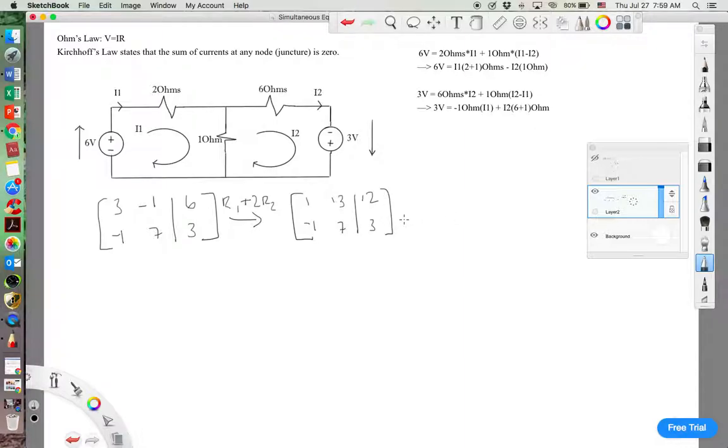And let's take R2 plus R1. R2 plus R1 gives us 1, 13, 12, 0, 20, and 15.